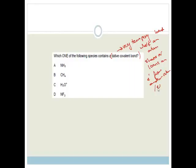Let's move on. Which one of the following species contains a dative covalent bond? Now what is special about a dative covalent bond? A dative covalent bond is a very temporary bond, where basically, an atom shares or loans an electron from another atom or molecule.